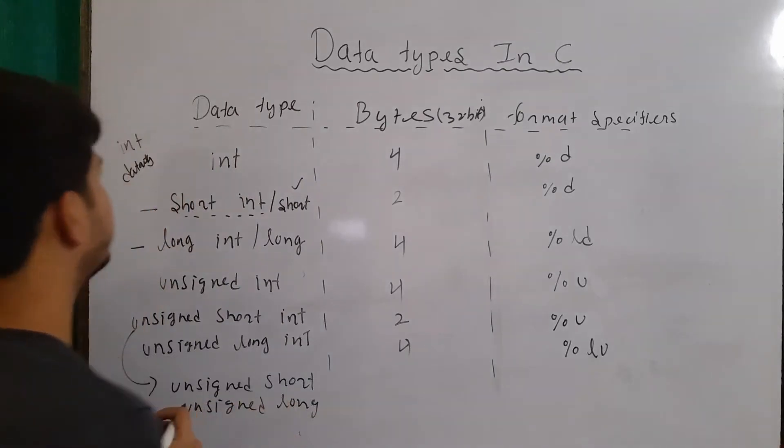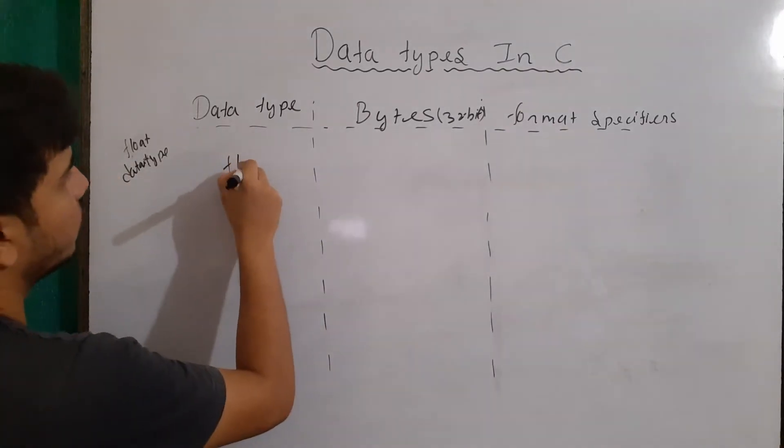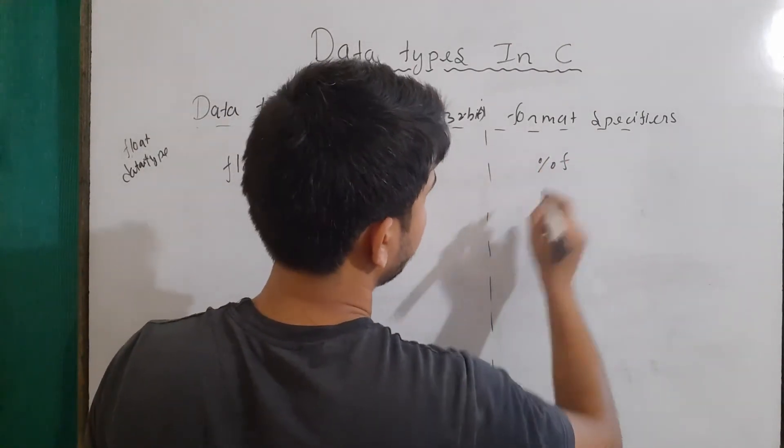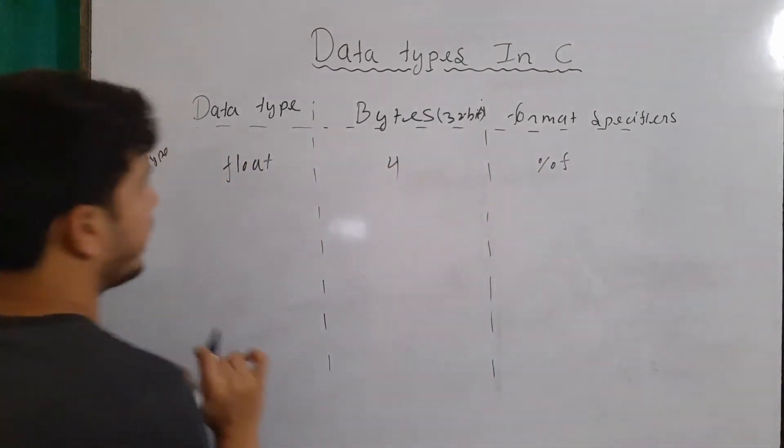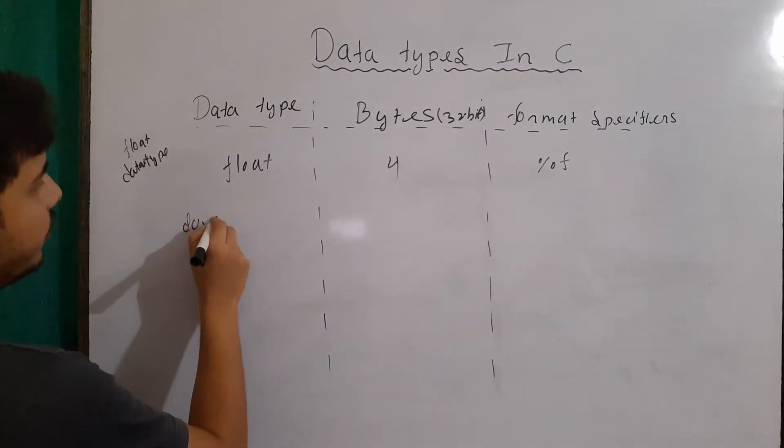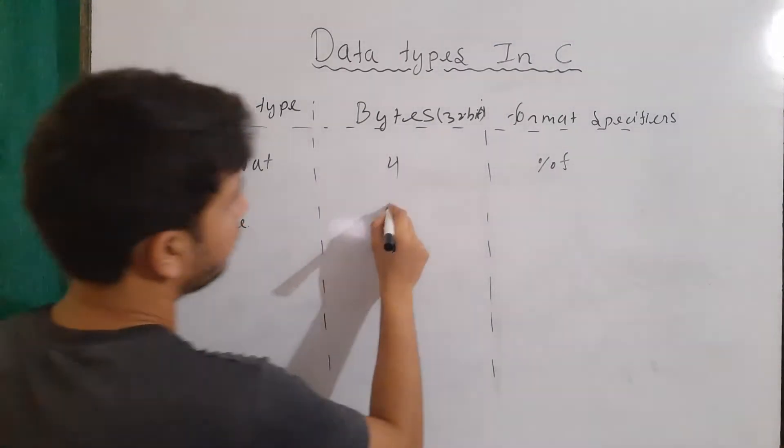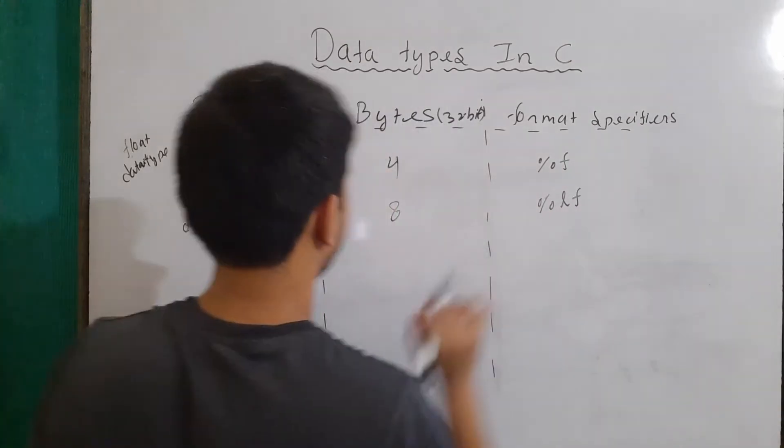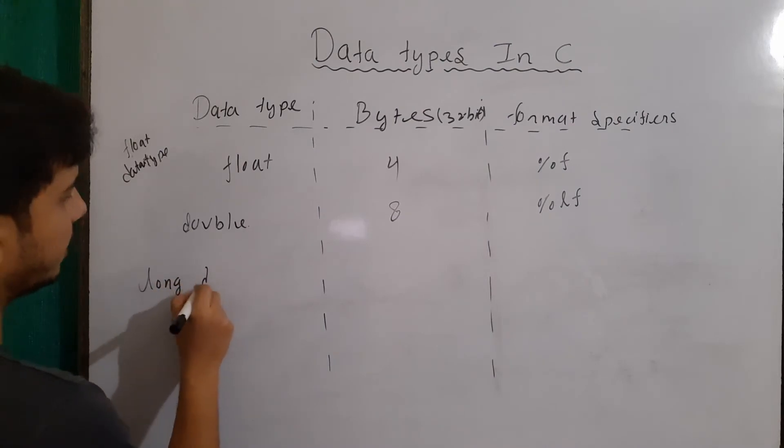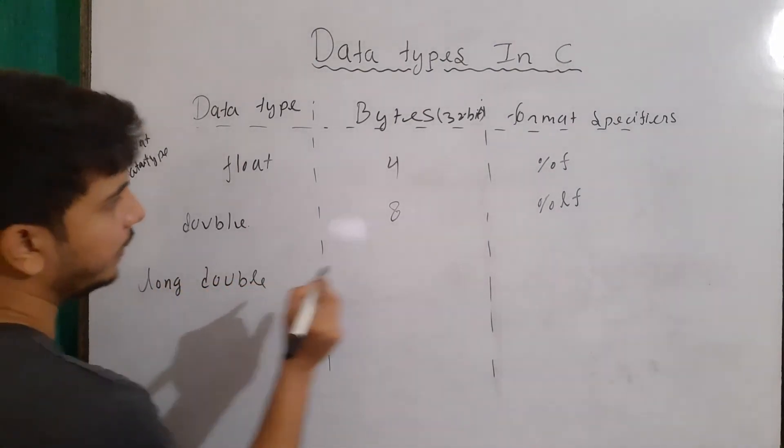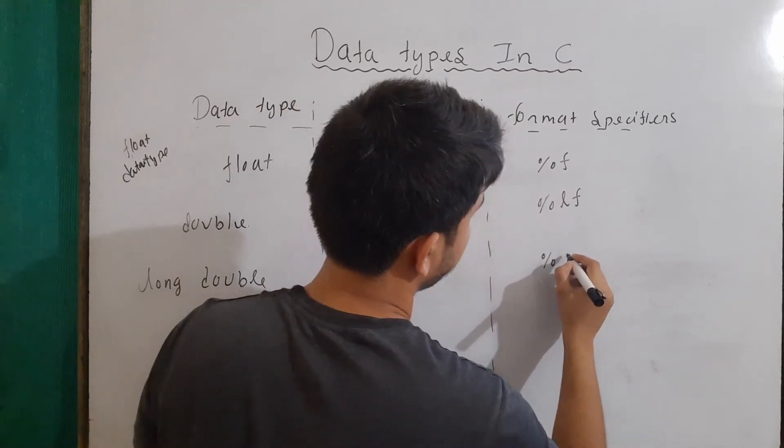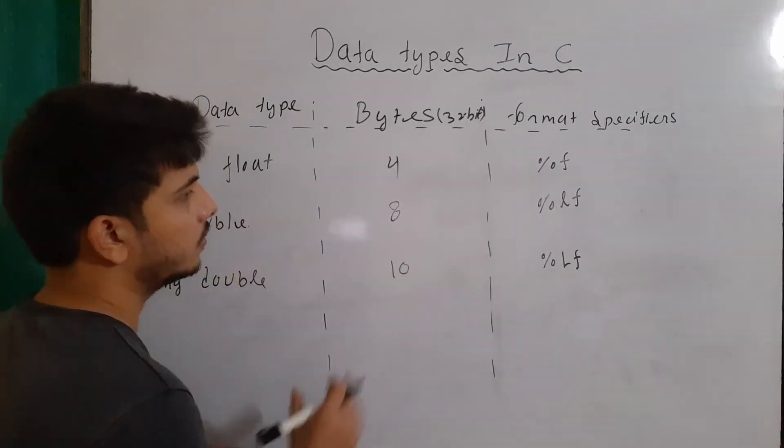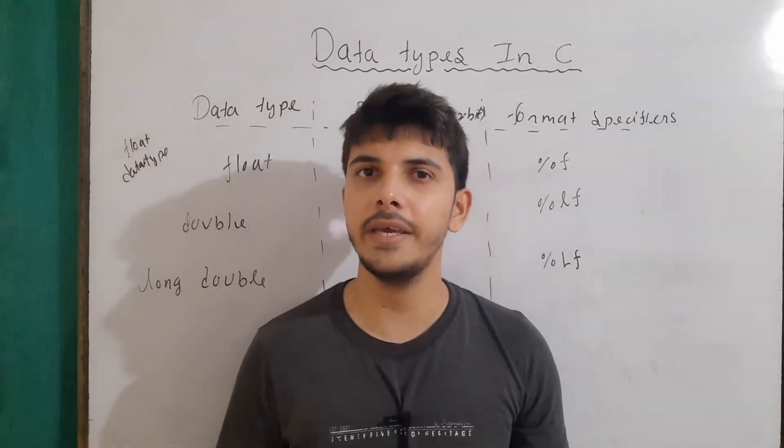Now, let's talk about the float data types. The first one here is float, and this will be of 4 bytes and the format specifier for this will be %f. Then we have double, and this will be of 8 bytes and this will be represented with %f. Then we have long double, and this will be of 10 bytes and here the format specifier will be capital L and F. So these are our data types that we use in C programming language.